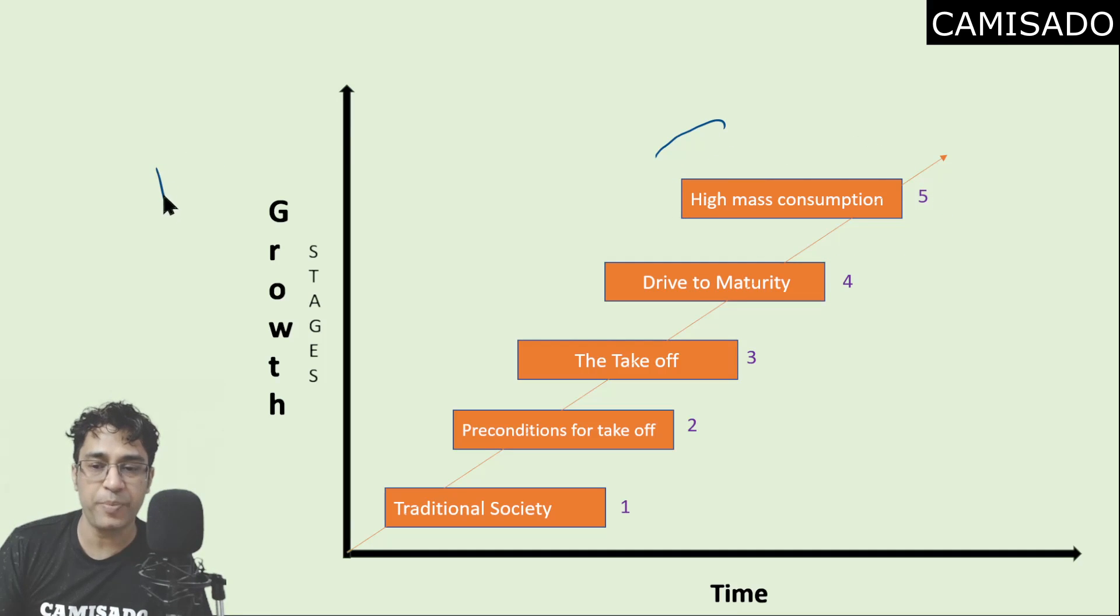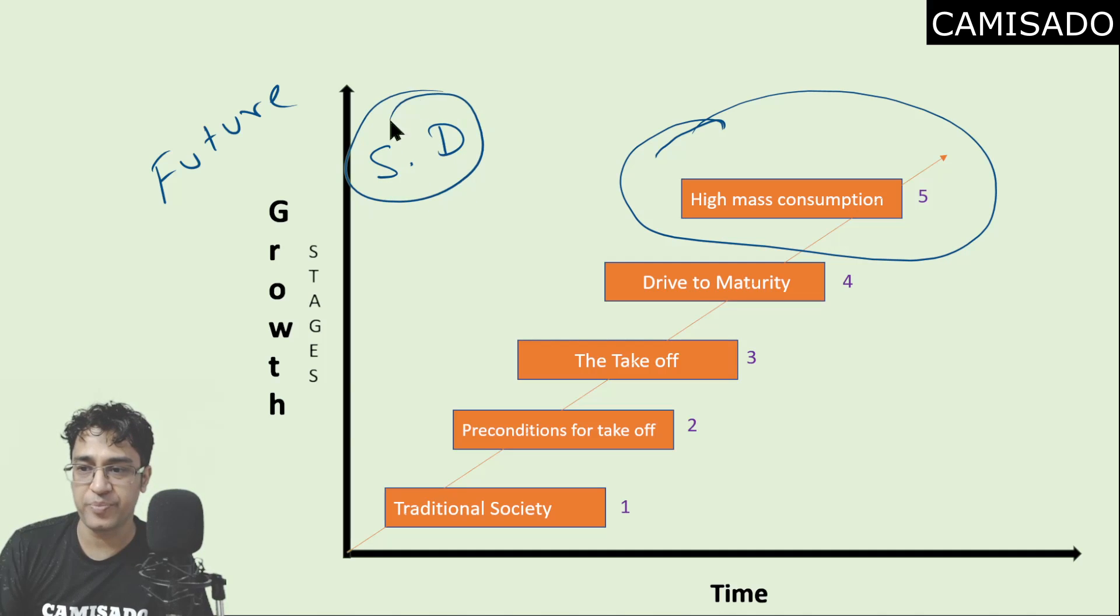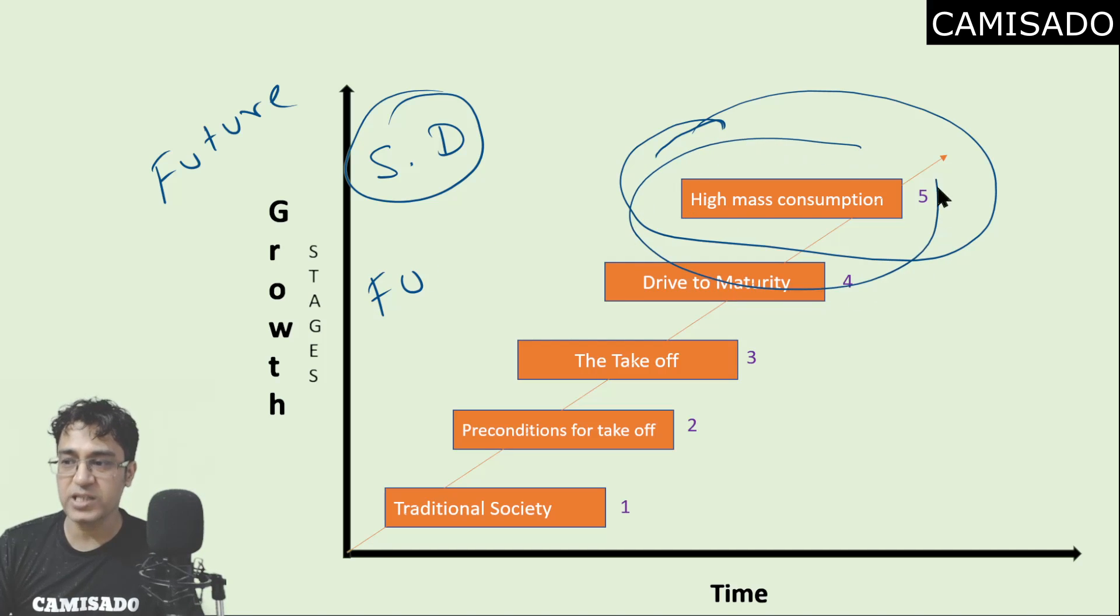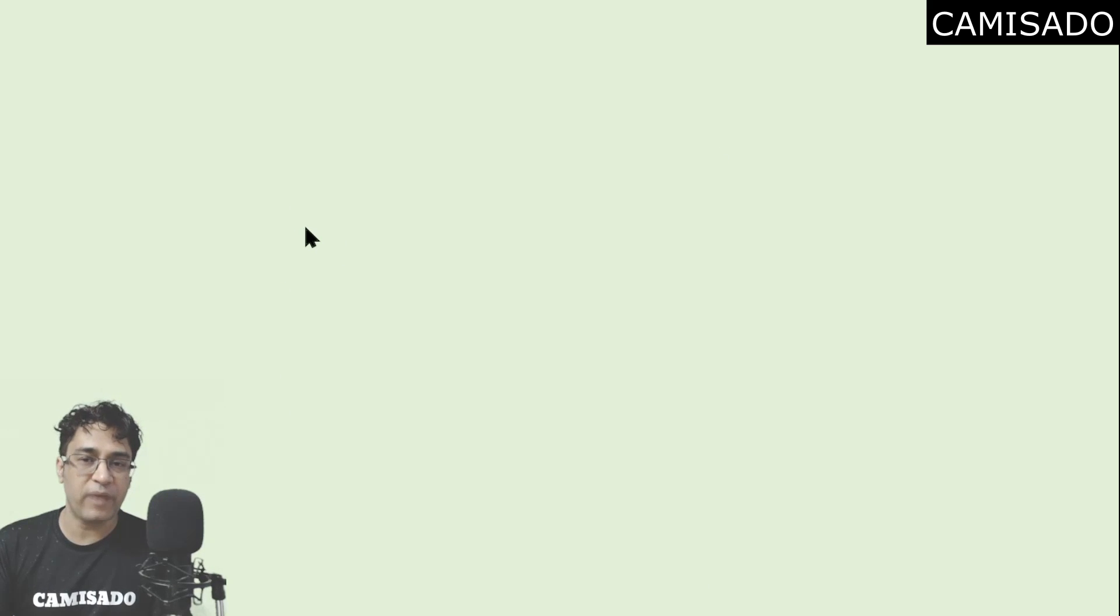The purpose of this model was to anticipate the future but after high mass consumption he has not spoken about sustainable development. Because he has not spoken about sustainable development we can say that this model is not futuristic. Moreover this model abruptly stops at high mass consumption and therefore we cannot extrapolate this model to future. Even though in the 70s Rostow had spoken about beyond consumption, in this present model he did not speak about what will happen after high mass consumption so it is difficult to extrapolate this model in future.